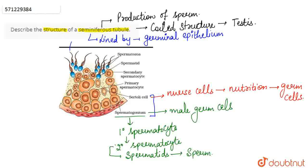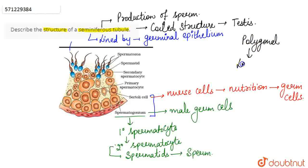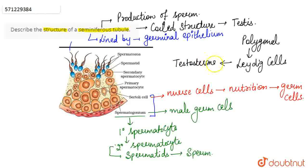Just adjacent or side by side to the seminiferous tubule, there are present some large polygonal shaped cells. These large polygonal shaped cells are known as the Leydig cells. They carry out the function of secreting testosterone. Leydig cells secrete the male sex hormone, that is testosterone. So this is the complete structure of the seminiferous tubule.